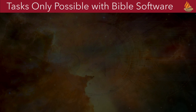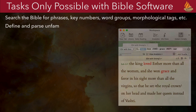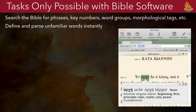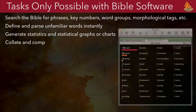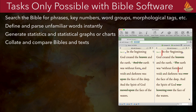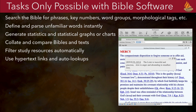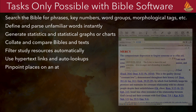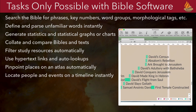There are also tasks that can only be performed with Bible software. Here's a sample of eight of the most popular: search the Bible for phrases, key numbers, word groups, morphological tags, and so on; define and parse unfamiliar words instantly; generate statistics and statistical graphs or charts; collate and compare Bibles and texts; filter study resources automatically; use hypertext links and auto lookups; pinpoint places on an atlas automatically; and locate people and events on a timeline instantly.